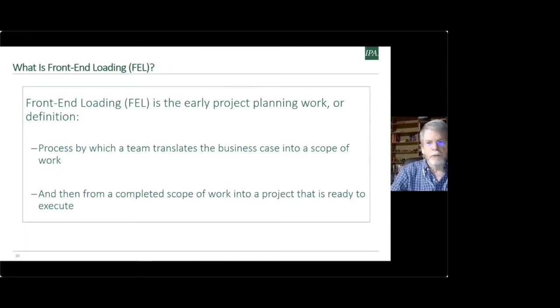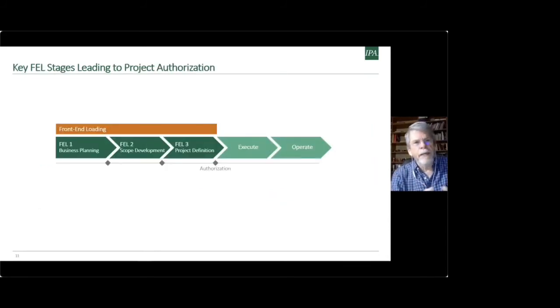And so we at IPA look at it, as I'd shown in an earlier graph, we break it down into three major elements or stages. And this isn't the forum or the environment to go into the details of each phase. But those three together make up this front-end loading phase that, as I said earlier, ends with that formal authorization by the company for full funds authorization to actually begin detailed design, procurement, ultimately construction, commissioning, and startup. But the amount of work that goes on in those first three phases is critical to the success of capital projects.